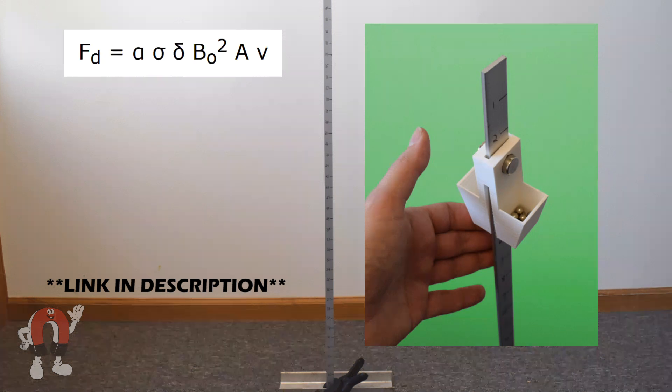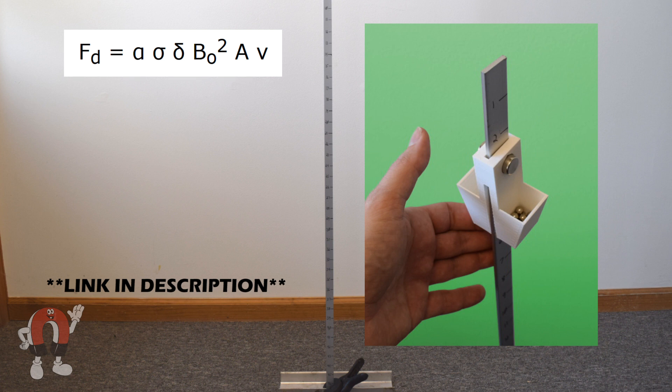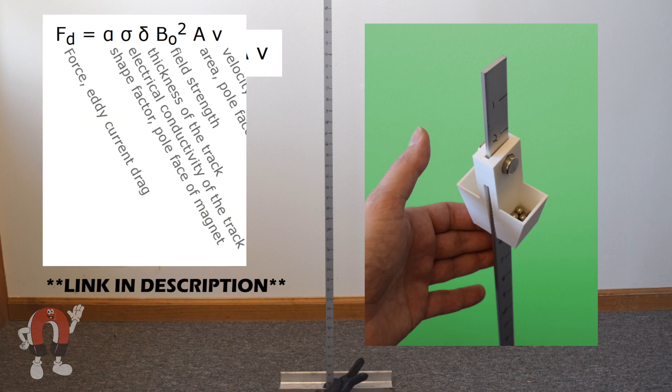We compared all this data to a formula for drag force. By plugging in values like field strength and the aluminum thickness, we can estimate the eddy current drag force as a function of velocity.